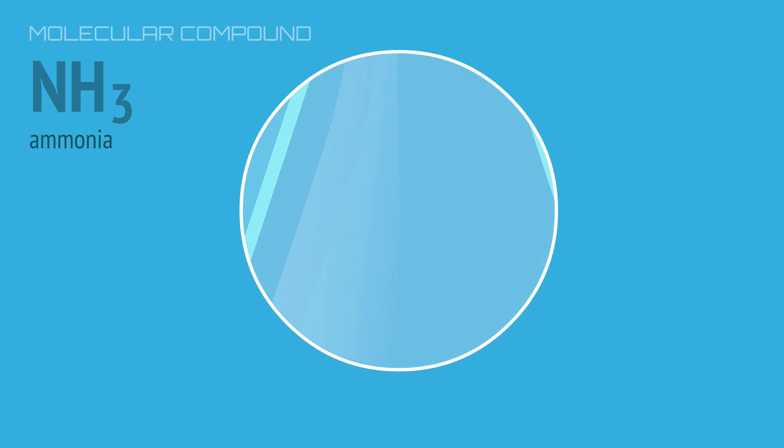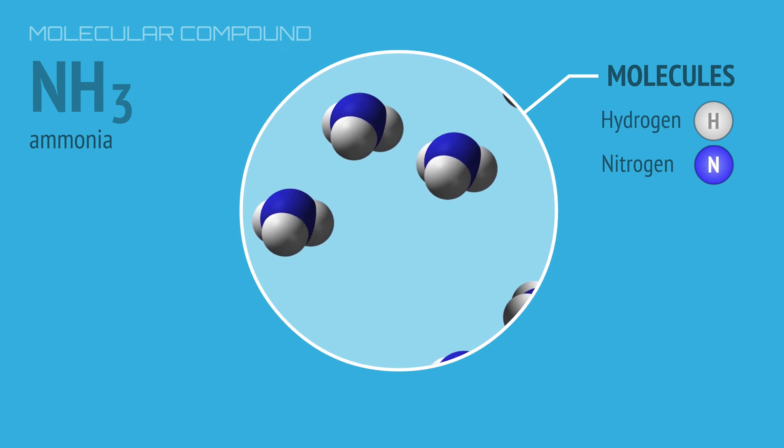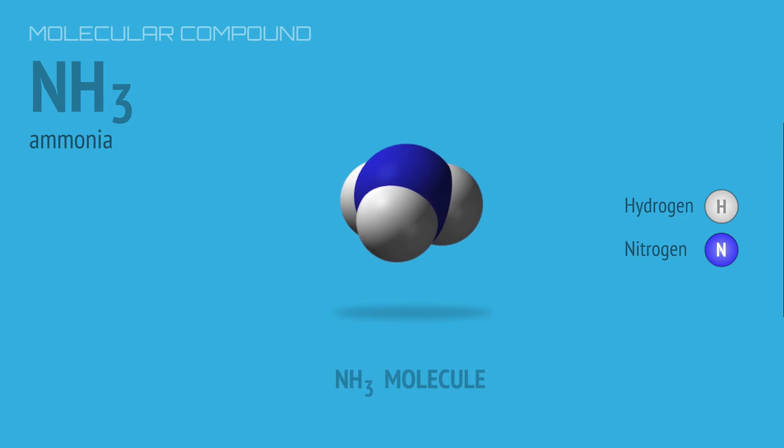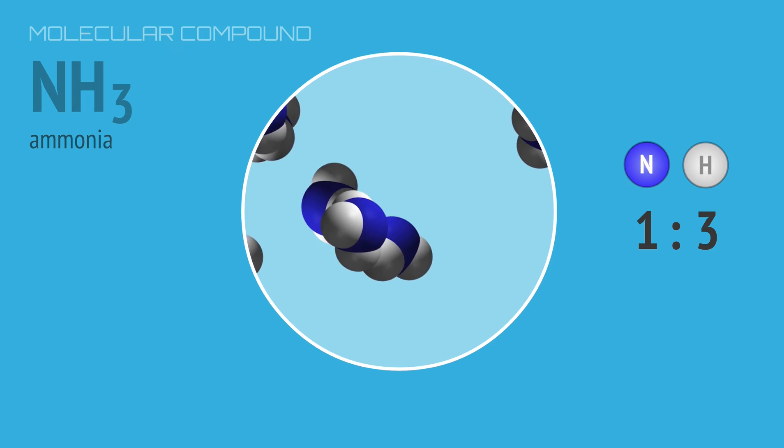Ammonia is a compound made of the elements nitrogen and hydrogen bound together as molecules. Each ammonia molecule has one nitrogen atom bonded to three hydrogen atoms, giving a one-to-three ratio of nitrogen to hydrogen.